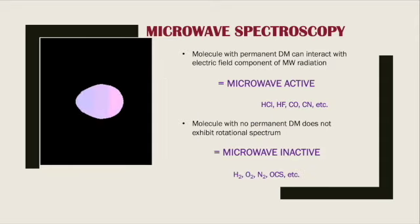Molecules having a permanent dipole moment can interact with the electric field component of microwave radiation. These are termed microwave active molecules, like HCl, HF, CO, or CN - all molecules possessing permanent dipole moment have the capability of changing the electromagnetic field into oscillation.